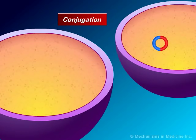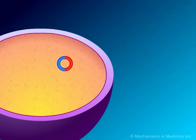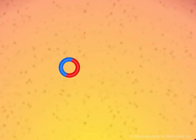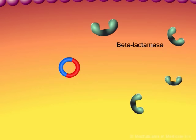When two bacteria come into close contact with each other, a small channel is created between them, which allows one of the bacteria to pass a copy of the resistance plasmid to the other. If the plasmid is transcribed and translated, the bacteria will begin to produce inactivating enzymes. These enzymes, capable of destroying beta-lactam antibiotics, are known as beta-lactamases.